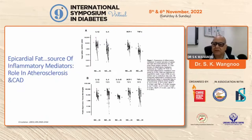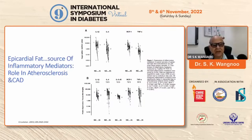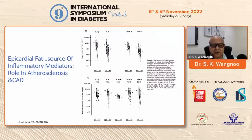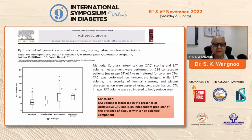We can say the epicardial fat is a source of inflammatory mediators and has a very important role in atherosclerosis and coronary artery disease. That is why we have to see how best we can prevent the accumulation of epicardial fat.